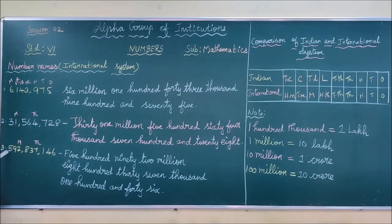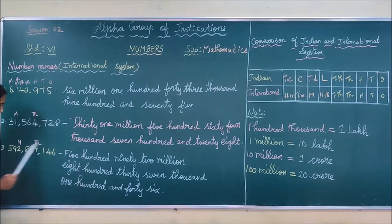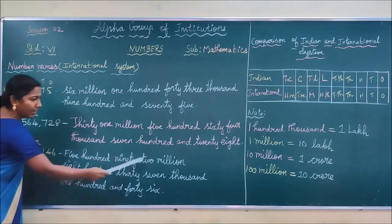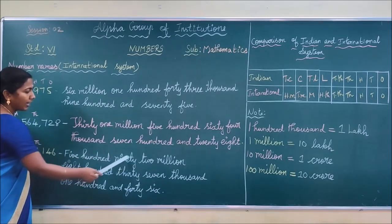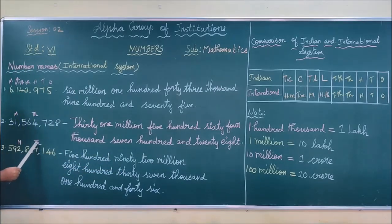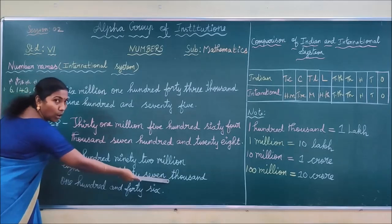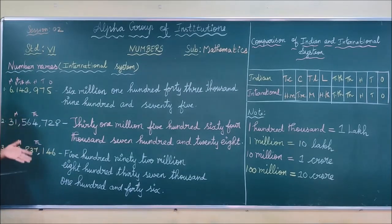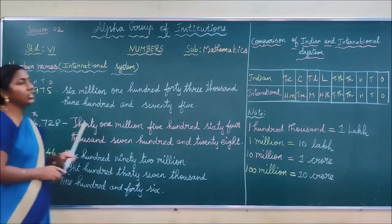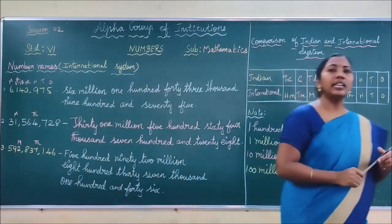For the 9-digit number, first write 592 million. What is the place value of 2? Million. That is why you write million. So 592 million. Next, 837 thousand. And then 146. Similarly, you have a home assignment with this type of problem. Observe the number carefully and solve it, children.